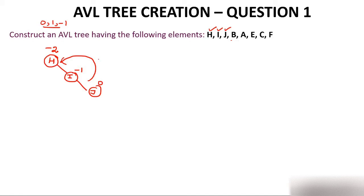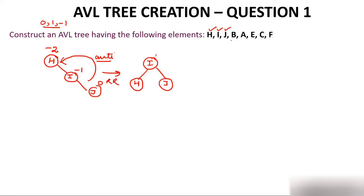In RR rotation, just below the node whose balance factor is violated, rotate anti-clockwise. After the anti-clockwise RR rotation, I comes up, H comes to the left, and J stays to the right. This is still a valid BST. The balance factors become 0, 0, and 0. The tree is now balanced and is an AVL tree. Now insert B.